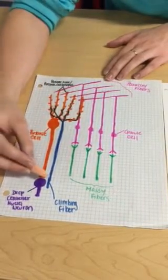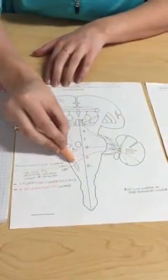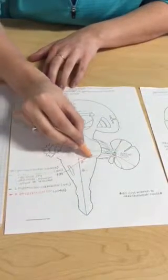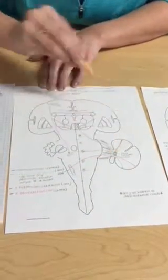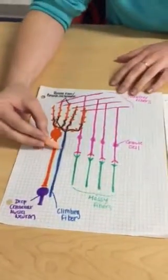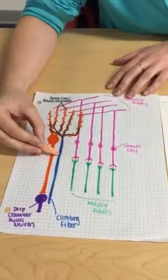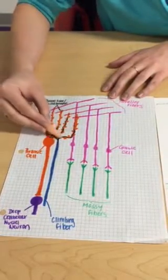The only pathway that is a climbing fiber is the olivocerebellar pathway, which comes from the inferior olivary nucleus to the cerebellar cortex and gives off a branch to the deep nuclei as well. They use the neurotransmitter glutamate to give off powerful excitation to the Purkinje fibers. They only fire when immediate danger is required.